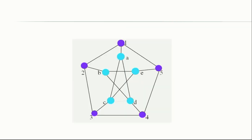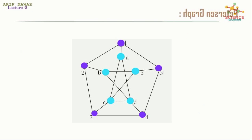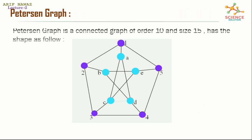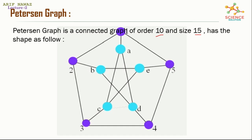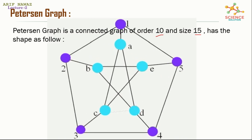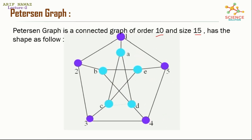Petersen graph: a special type of graph. The Petersen graph is a connected graph of order 10 and size 15, with the distinctive shape shown in the diagram.